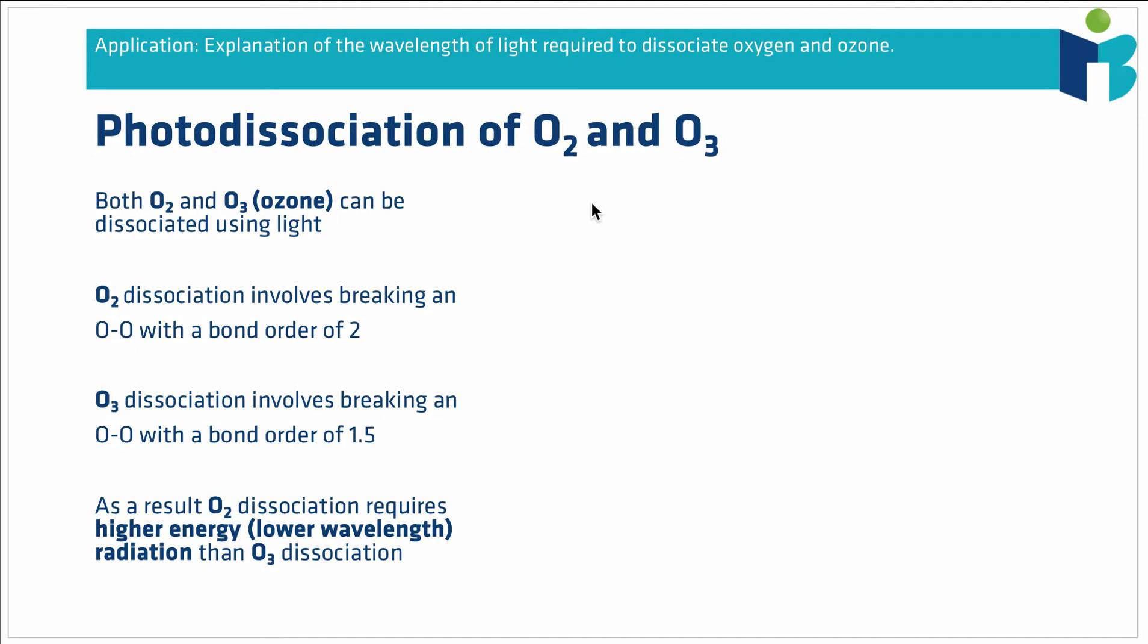In the atmosphere we have two main allotropes of oxygen. The first is what we usually refer to as just oxygen gas, that's O2, and that's just an oxygen atom double bonded to another oxygen atom.